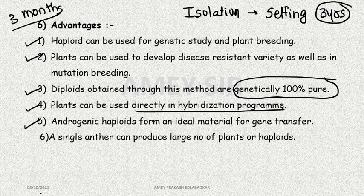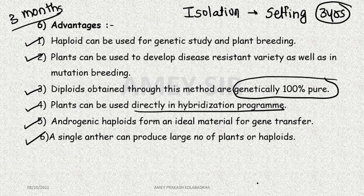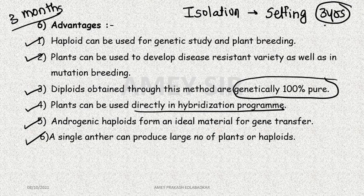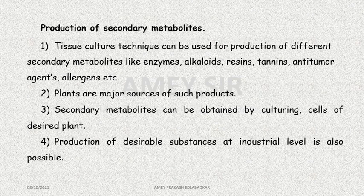Anther culture provides ideal material for gene transfer. A single anther can produce a large number of plants. Male sterile lines and female sterile lines can also be produced — those that do not produce gametes. The key advantage of pollen culture is that it reduces the three years needed to maintain homozygosity down to just three months.